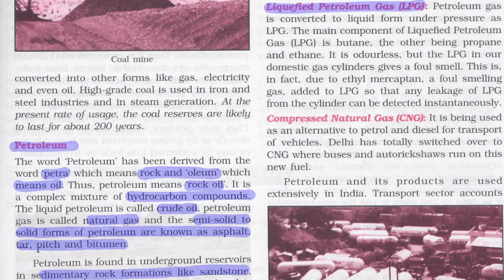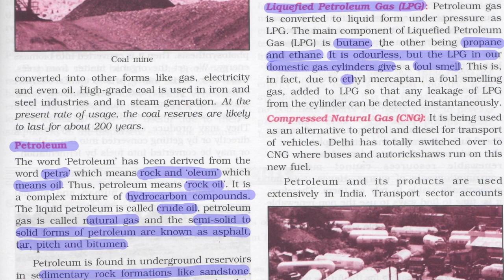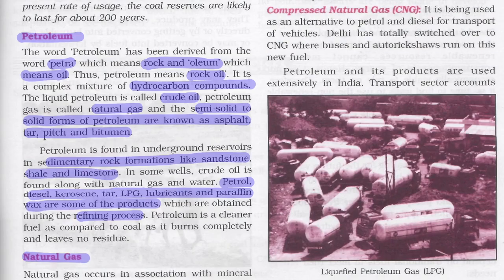LPG — Liquefied Petroleum Gas — is petroleum gas converted to liquid form under pressure. The main component of LPG is butane, with others being propane and ethane. LPG is odorless, but domestic gas cylinders give a foul smell due to the presence of ethyl mercaptan, which is added so that in case of leakage the LPG can be detected instantaneously. CNG — Compressed Natural Gas — is used as an alternative to petrol and diesel for transport vehicles.